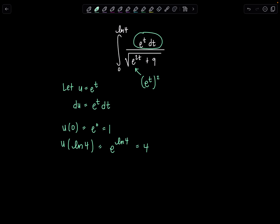All right, here we go. Then let's rewrite everything in terms of u. Definite integral from 1 to 4, and then e to the t dt in the numerator. Remember, that's just du. And then the denominator is going to be square root of u squared plus 9. How are we doing? All right, good. Now I'm looking here, it's trig sub time.